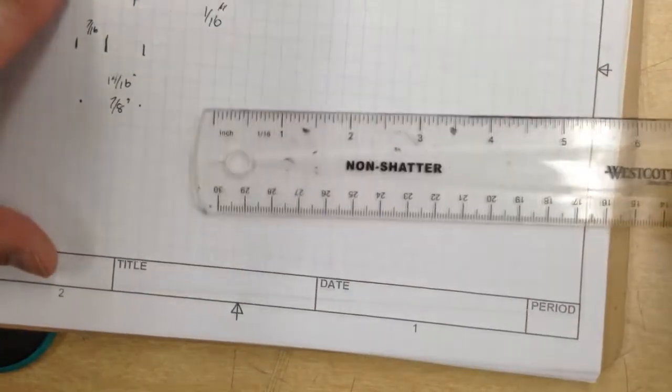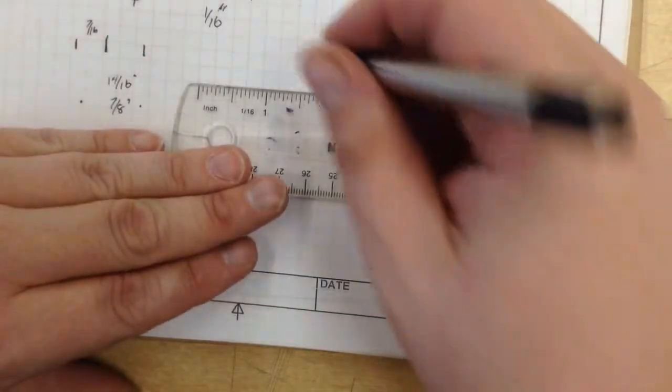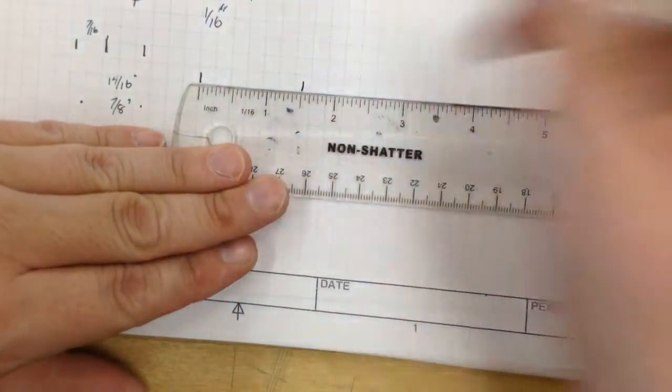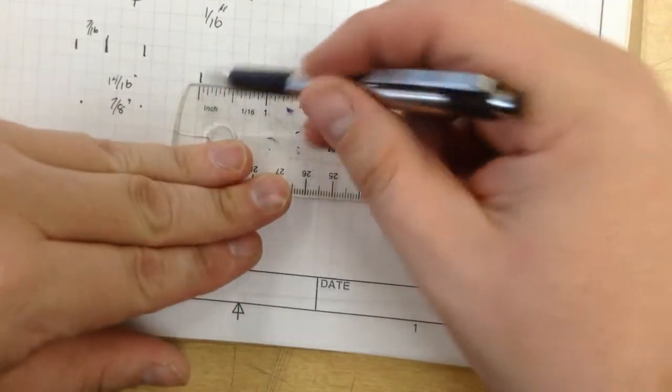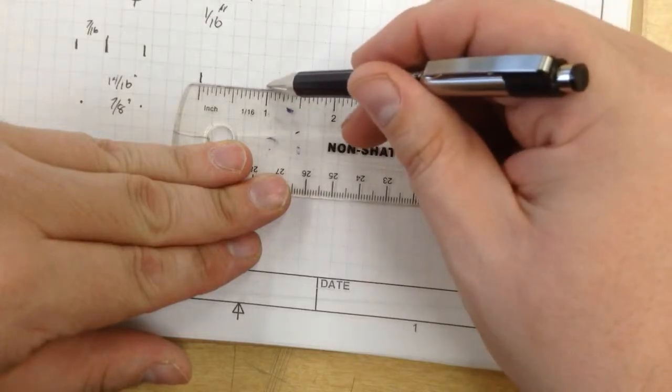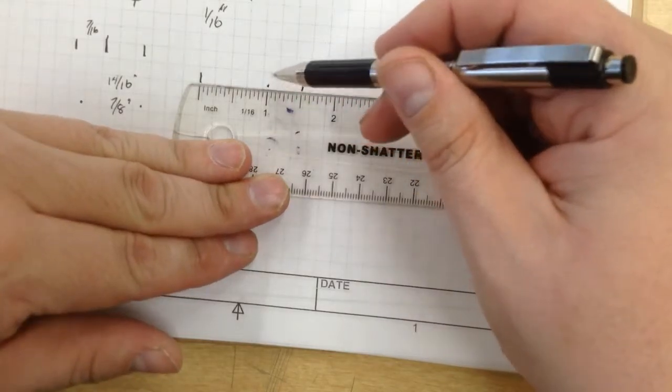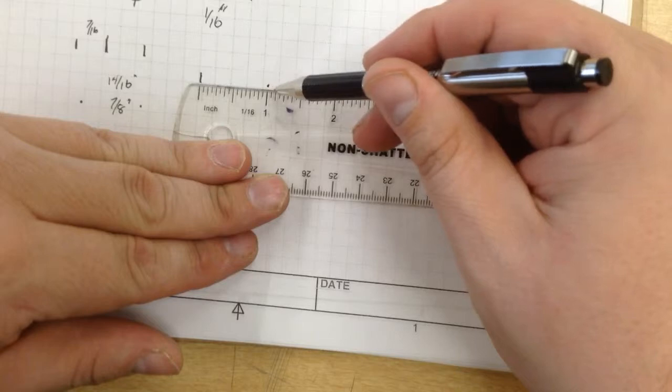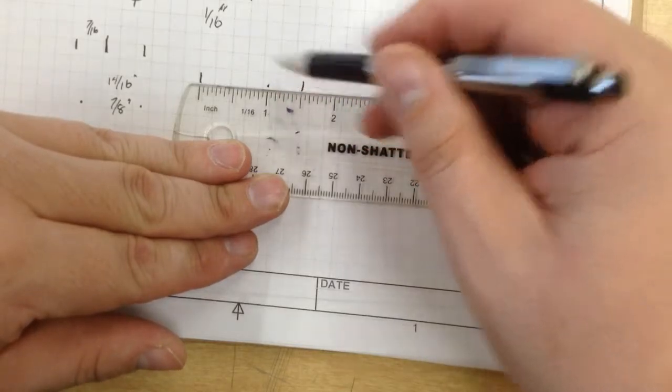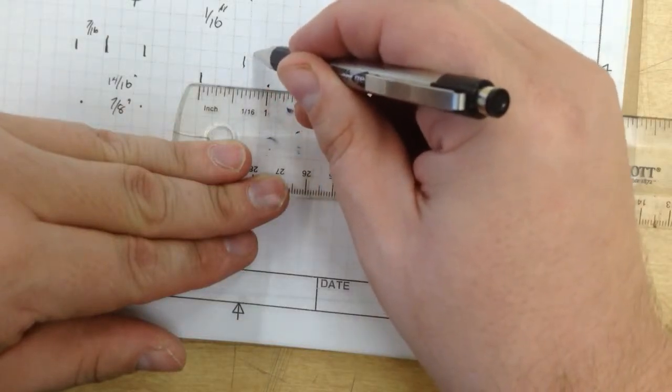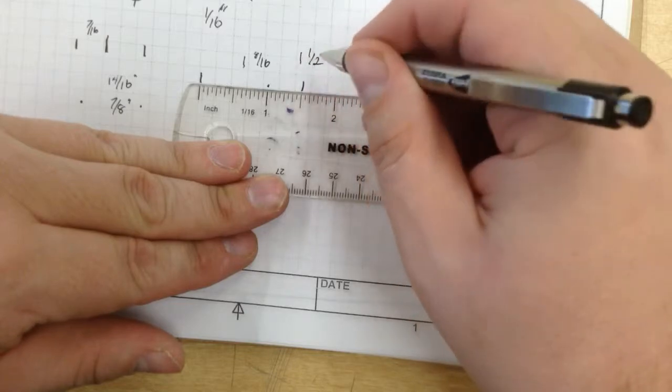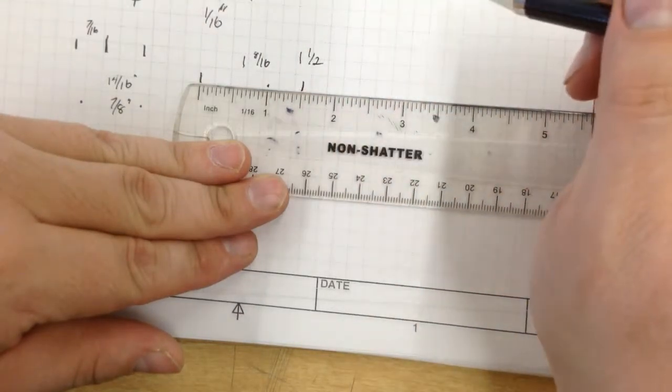Now let's say we've got this distance right here. Okay, we want to measure from there to there. There's no reason to count all the lines up to here because right there is one inch. So we're going to go one and one-sixteenth, one and two-sixteenths, one and three, one and four, one and five, one and six, one and seven, one and eight. So this is one and eight-sixteenths, which is also one and one-half when we break that down, when we reduce it.